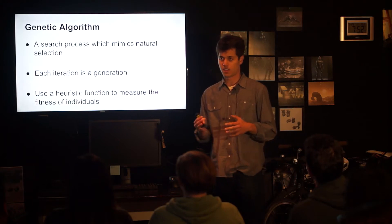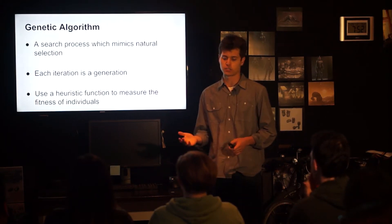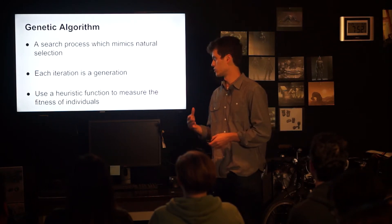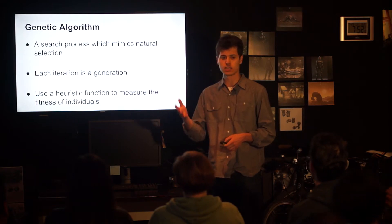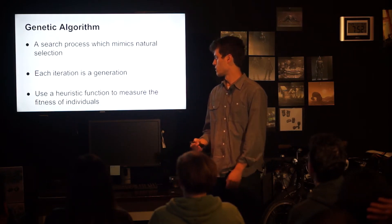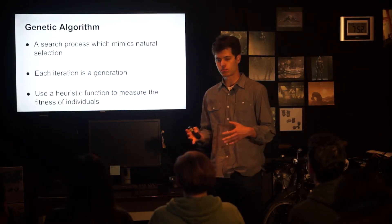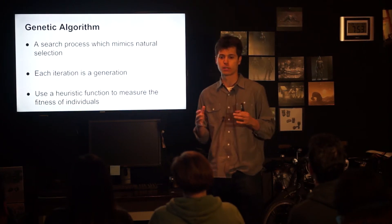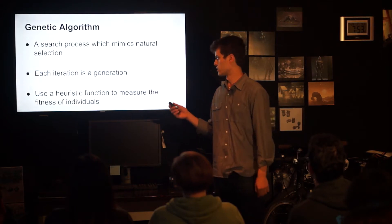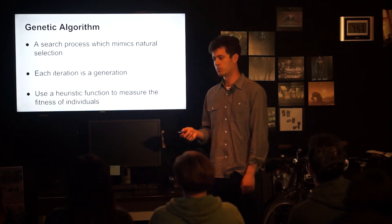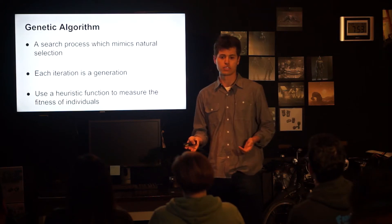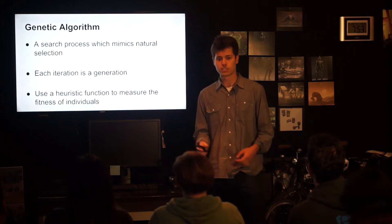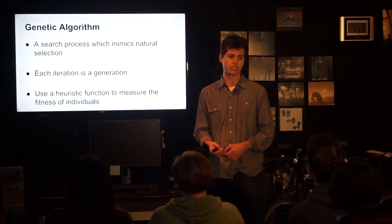A genetic algorithm on the whole is a search process — a search algorithm in which you iterate multiple times over the same scenario to arrive at further understanding with each iteration. Why it's called a genetic algorithm is it mimics the process of natural selection. You can draw a parallel between each programming term and the science term. Each iteration is a generation, each node in the tree is called an individual. And the way it works is we use something called the heuristic function to measure the fitness, or how good an individual is in a given generation.